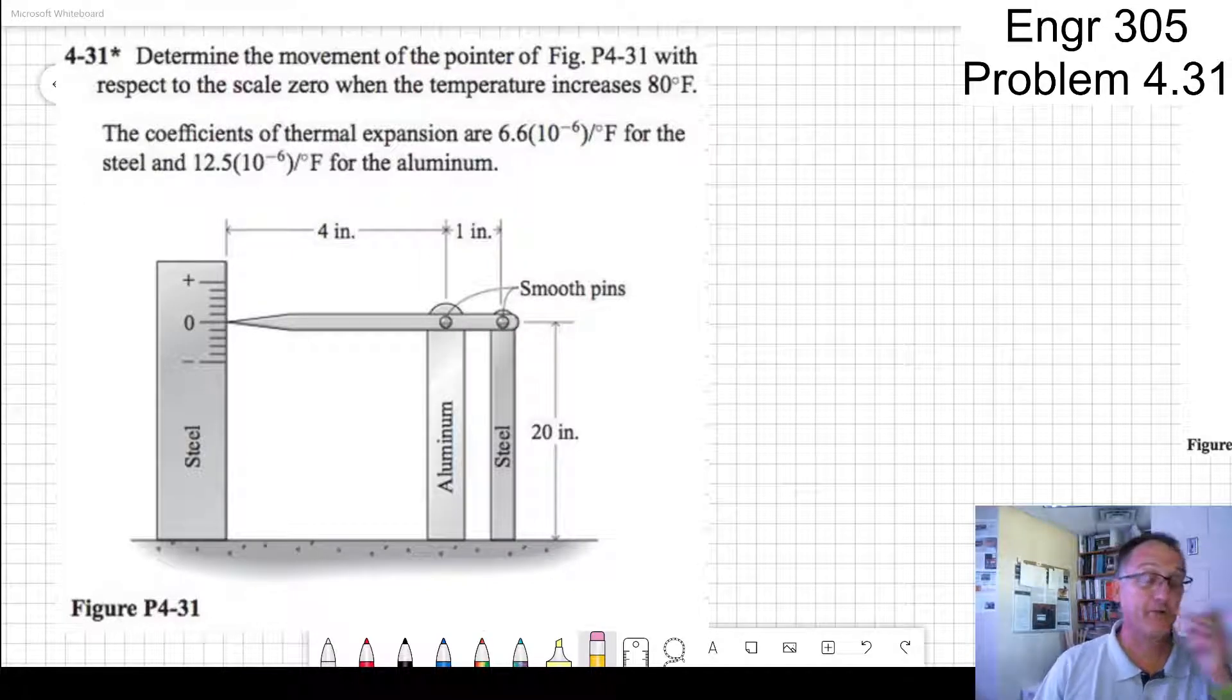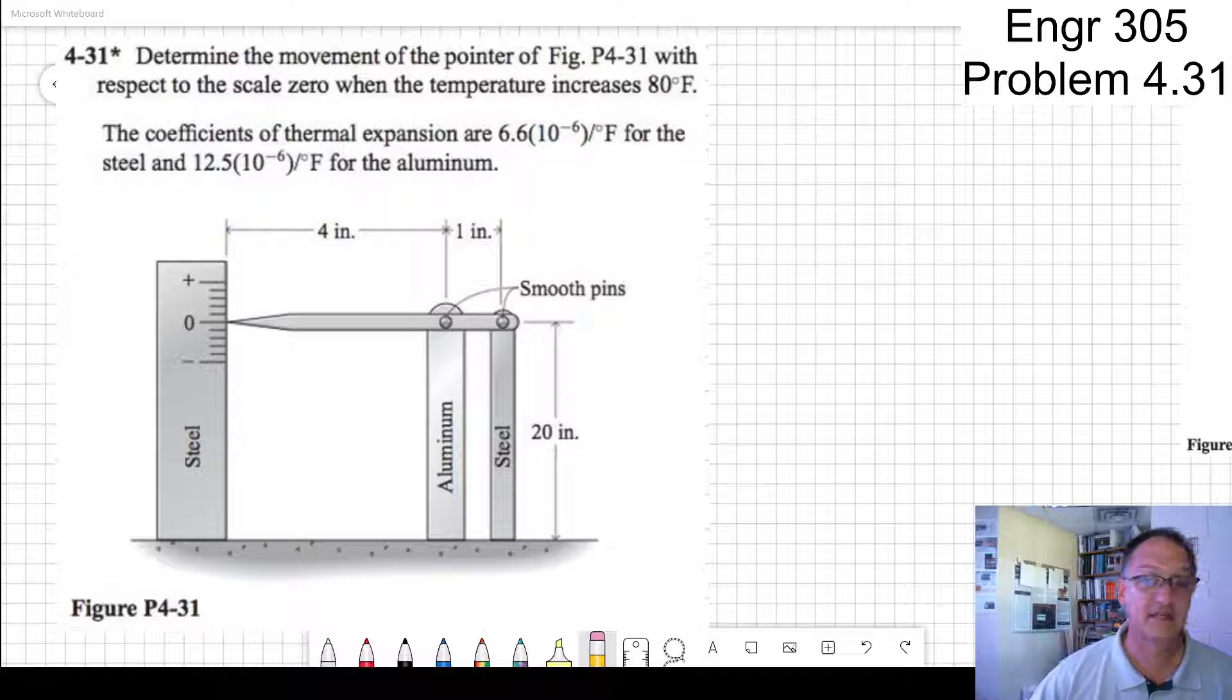Engineering 305, Chapter 4, Problem 31. This has got to be the sixth try of this. It's just been a disaster. Determine the movement of the pointer, Figure 4-31, with respect to the scale zero when the temperature increases 80 degrees Fahrenheit.